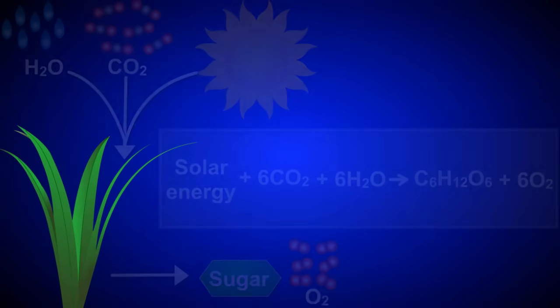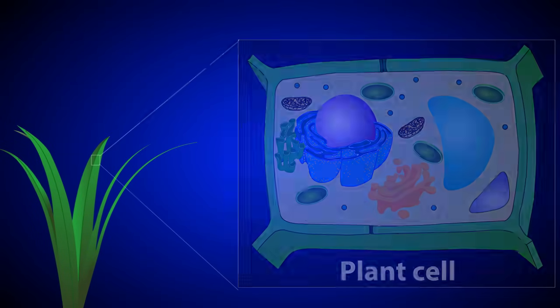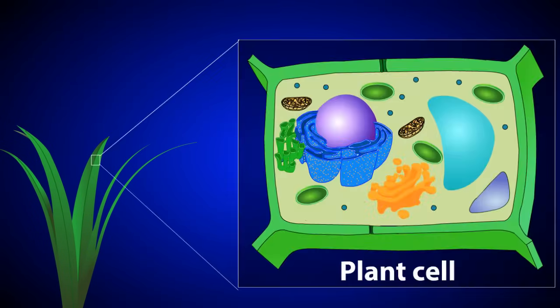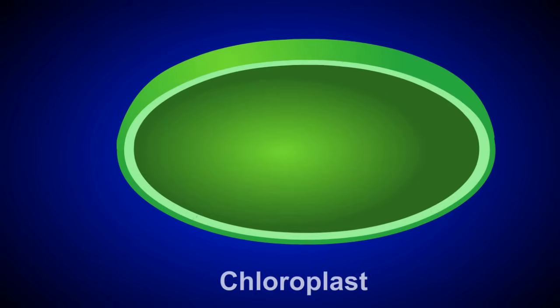To better understand the reactions of photosynthesis, let's take a closer look at the leaves of this plant. If we zoom in on one photosynthetic plant cell, we can see the chloroplast where the reactions of photosynthesis occur. Let's zoom into this chloroplast to get a closer look.